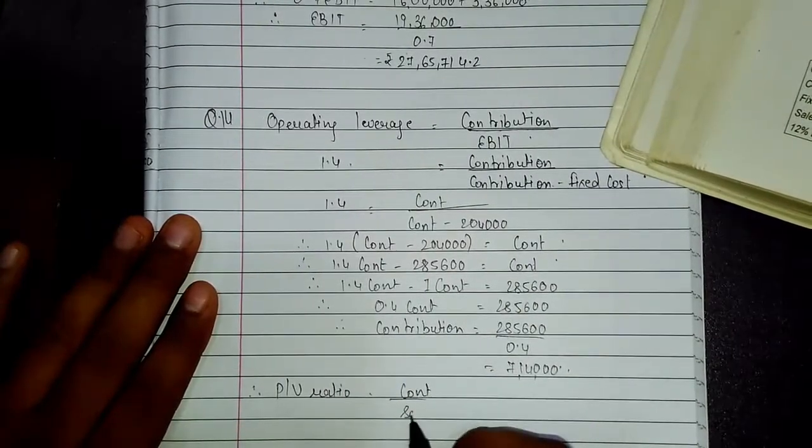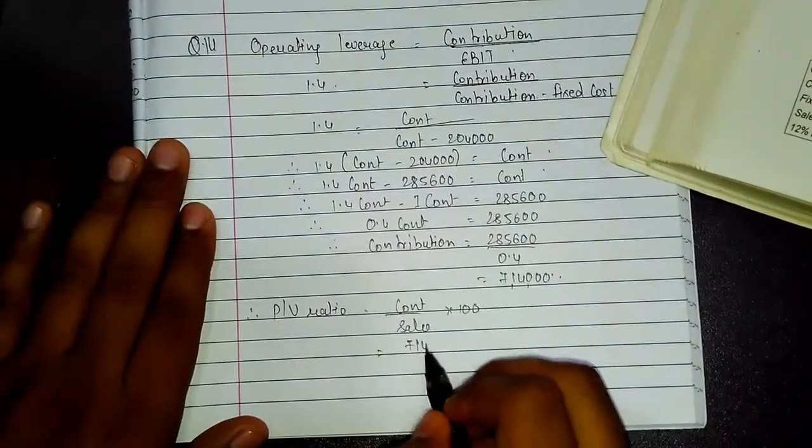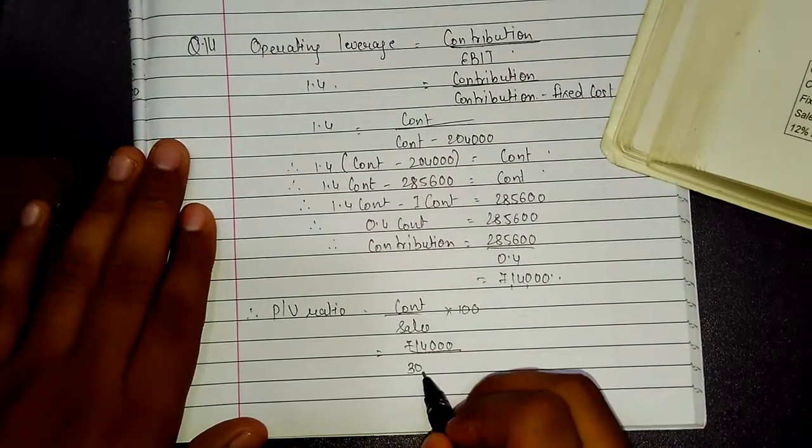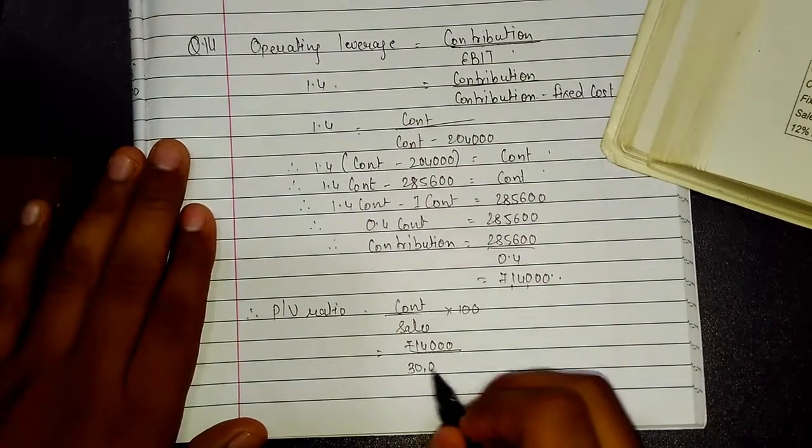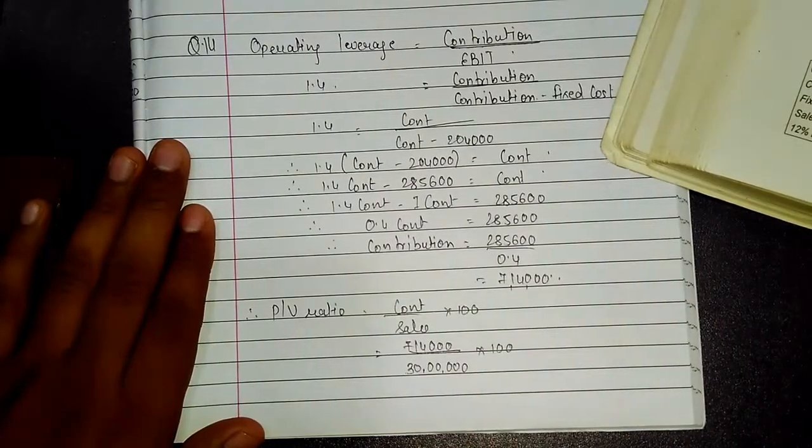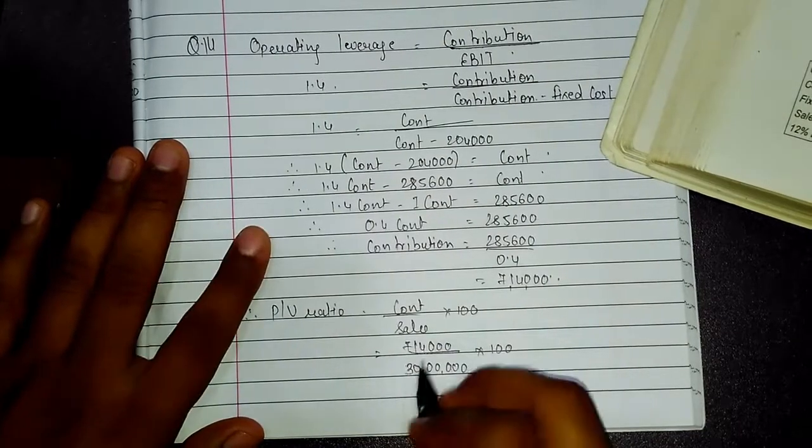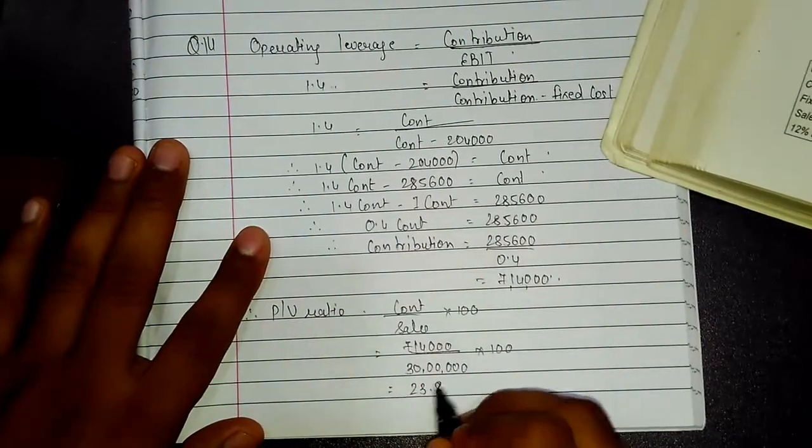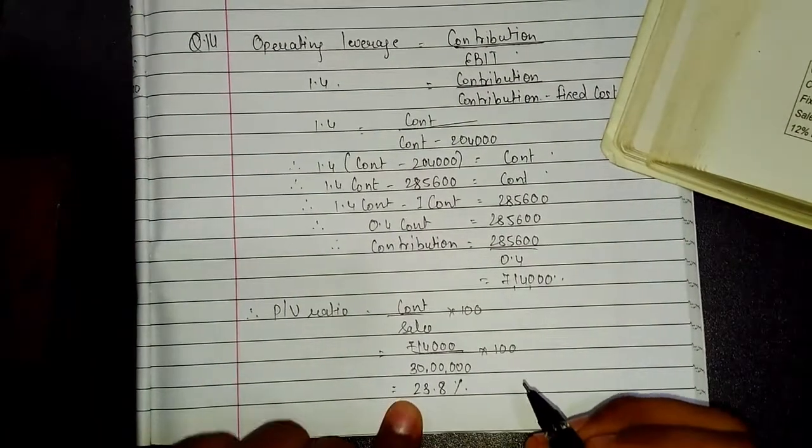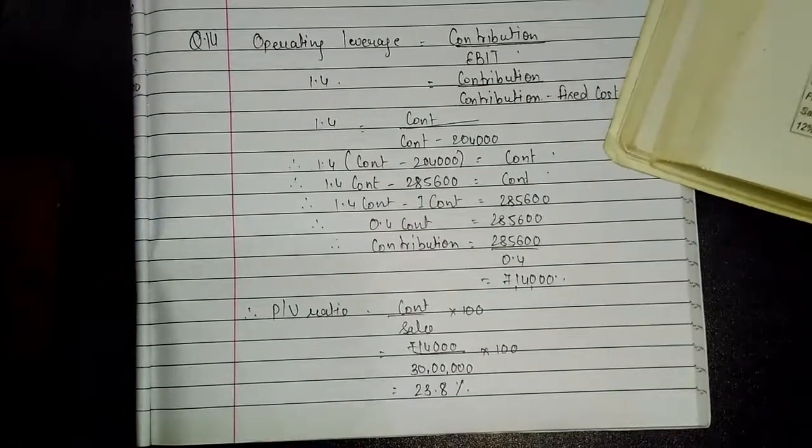Indirectly we got our contribution equal to 7,14,000. Therefore PV ratio equals contribution upon sales into 100. So contribution is 7,14,000 divided by sales, which is 30 lakhs, into 100. Therefore 7,14,000 divided by 30 lakhs into 100 comes to 23.8%. So PV ratio equals 23.8%.